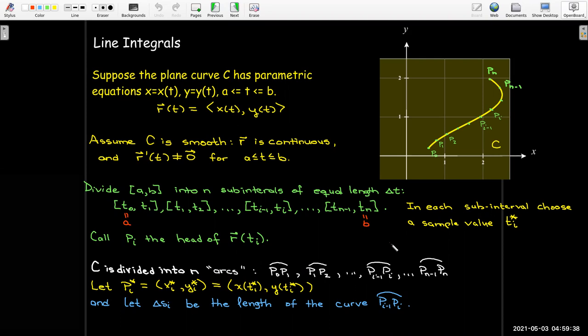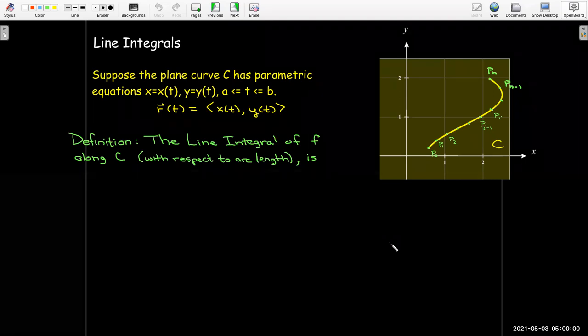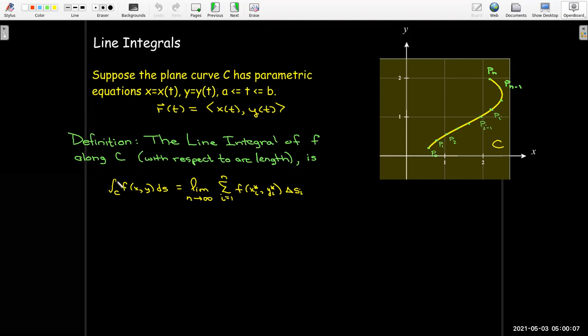That gives us all of the notation to be able to proceed like we did in Calc 1 and write a Riemann sum. Then we'll take the limit as n goes to infinity of that Riemann sum. The line integral of the function f along the curve c, with respect to arc length, is defined to be—we still use the same integral sign. Instead of having bounds, we have a subscript with the letter for the curve c, and our integral uses the differential ds, telling us that we're taking the integral with respect to arc length.